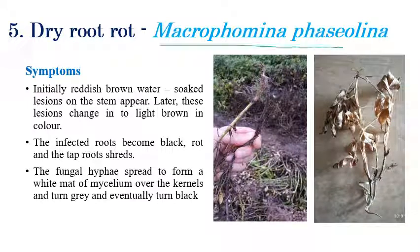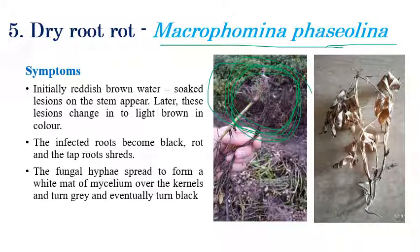Dry root rot is caused by Macrophomina phaseolina. Initially, water-soaked reddish brown lesions appear, and light brown discoloration of leaves follows. The infected roots become weak and convert into black structures, causing root rot.